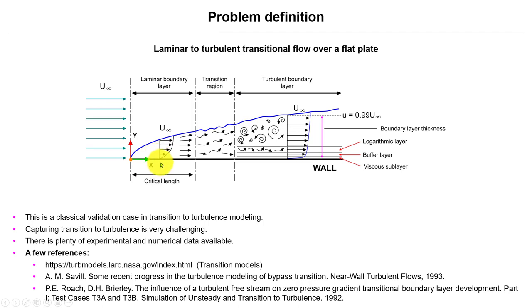This is another classical case in validation, specifically related to transition to turbulence. Just to remind you, transition to turbulence is very difficult, very tricky to capture, very elusive, and requires very fine meshes.